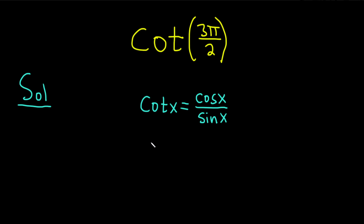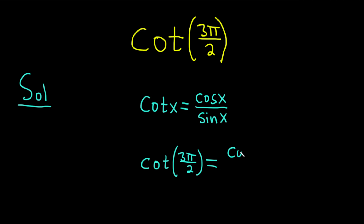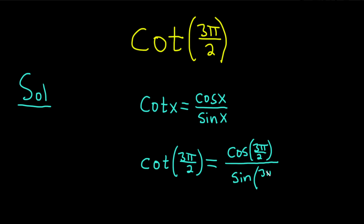For us, x is 3 pi over 2. So this is the cotangent of 3 pi over 2, and this is equal to the cosine of 3 pi over 2 divided by the sine of 3 pi over 2.